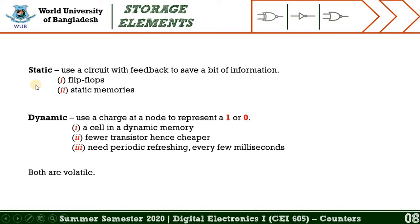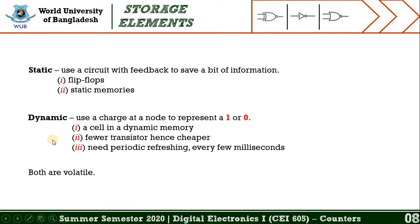Storage elements can be static or dynamic. In the static manner, a circuit with feedback is used to save a bit of information — examples include flip-flops and static memories. In the dynamic manner, a charge at a node is used to represent one or zero. An example of a dynamic storage element is a cell in dynamic memory, which uses fewer transistors and is cheaper but needs periodic refreshing every few milliseconds. Importantly, both static and dynamic storage elements are volatile.